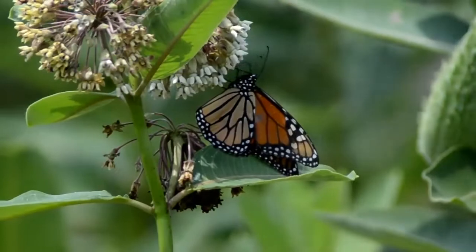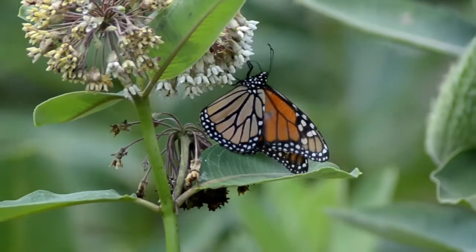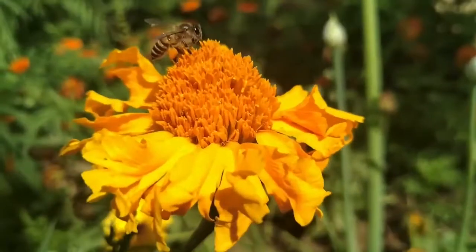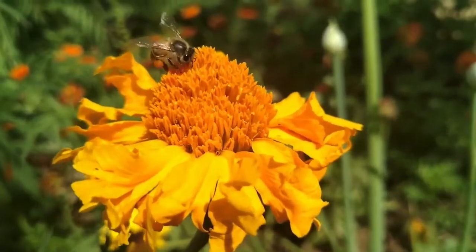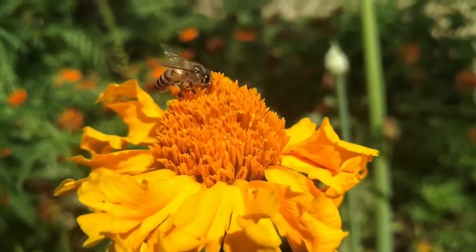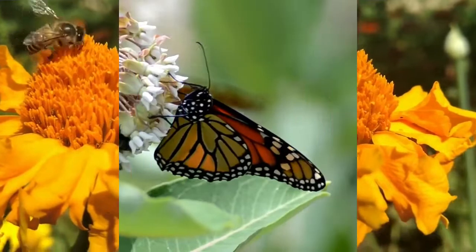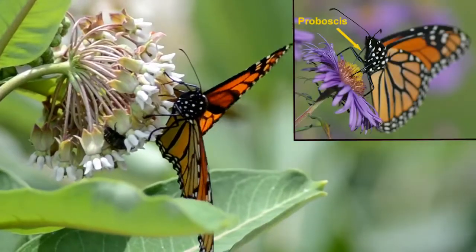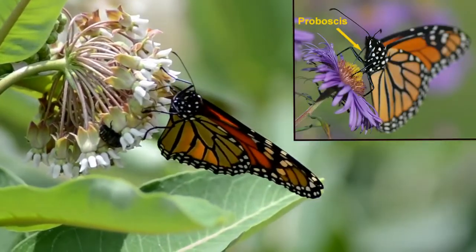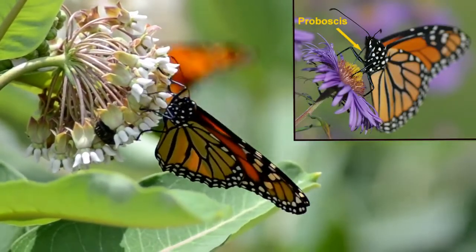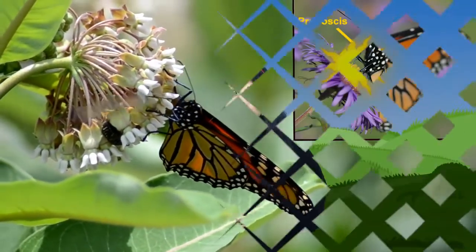Butterflies and honeybees suck nectar from flowers. They have long proboscises to suck nectar from flowers.